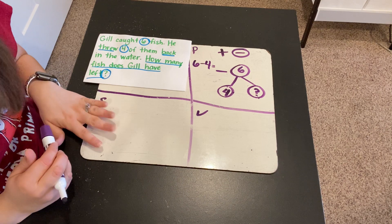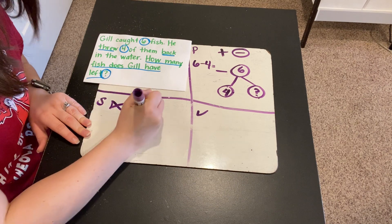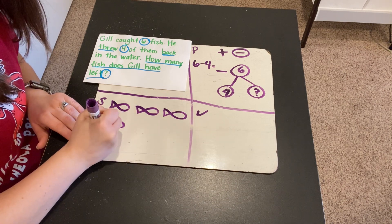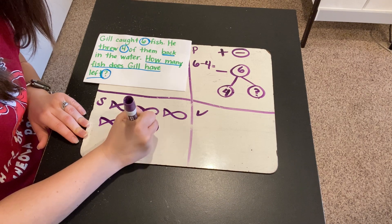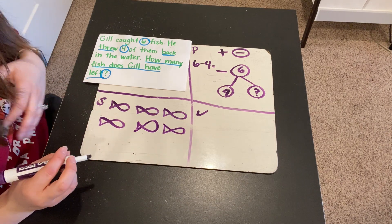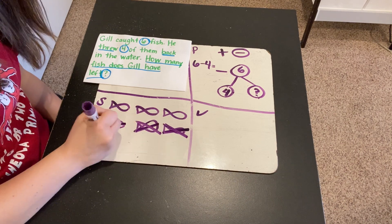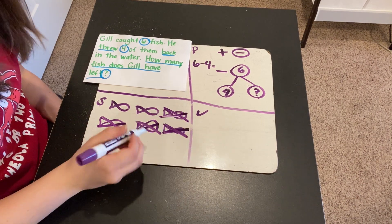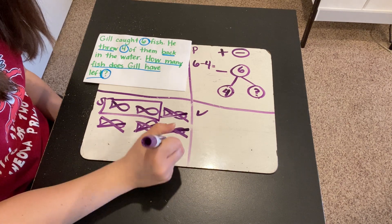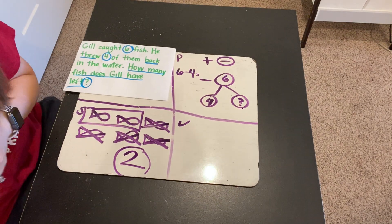Today, the first way that I'm going to solve this problem is by drawing a picture. So I'm going to draw a picture of six fish: one, two, three, four, five, and six. Here are my six fish. Now, Gil threw four of them back. So we're going to X out four: one, two, three, four. How many fish does Gil have left? One, two. So it looks like he has two fish left. But we are going to check it using a different strategy before we say that's definitely the answer.